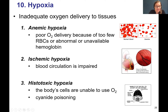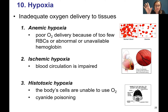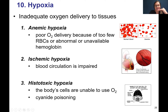Ischemic hypoxia is when the blood does not flow to a particular region — blood circulation is impaired. We often think of ischemic hypoxia happening after a blood clot completely occludes a blood vessel, and then all the underlying tissue does not get blood delivery, so it doesn't get oxygen diffusing into those tissues, leading to cell damage.